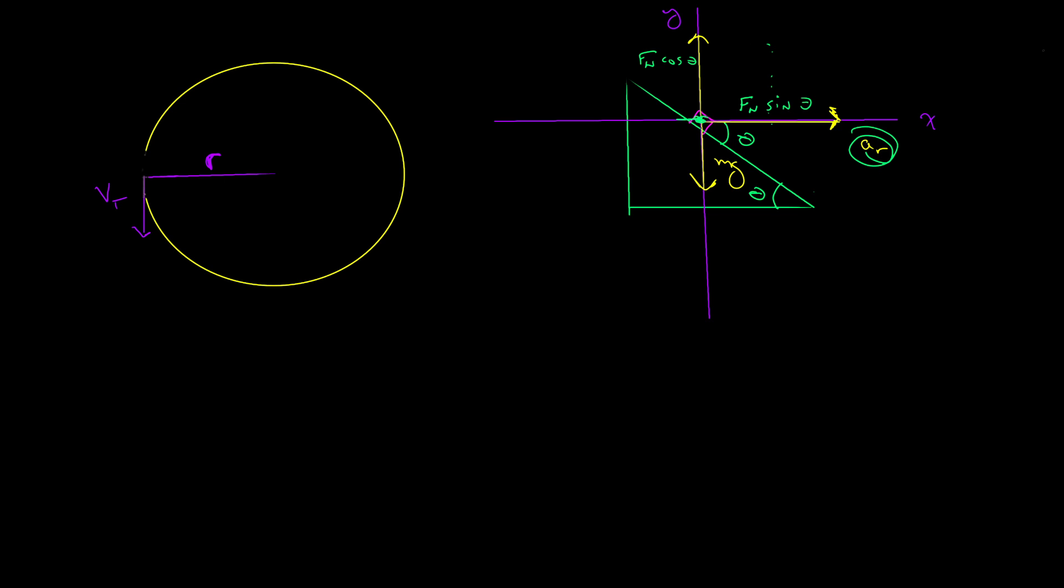The only thing supplying it is the normal force. So if we look at that equation, what we're going to say is the mass of the car times the acceleration will be supplied by the normal force. But we know uniform circular motion is related like this. And so we have our x components.